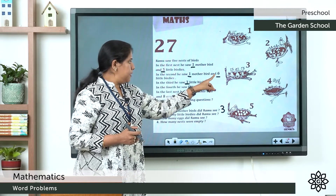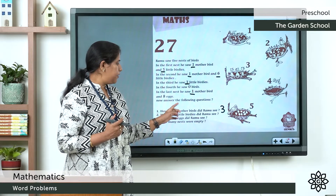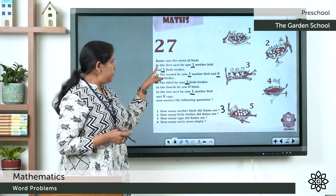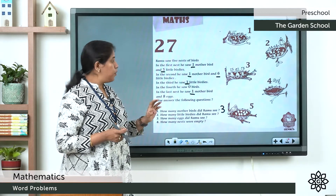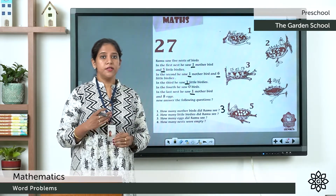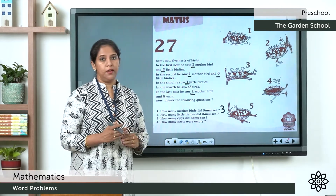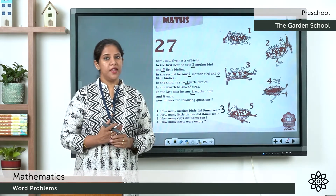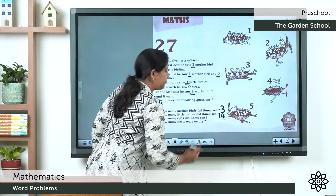So how many little birdies in all? 5 plus 6 plus 3 equals 11. Then after 11: 12, 13, 14. So the second answer is 14.